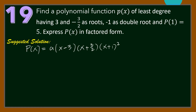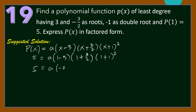Here, a is the leading coefficient of the polynomial function. Since P(1) = 5, we substitute x = 1: 5 = a(1 − 3)(1 + 3/2)(1 + 1)². So 5 = a(−2)(5/2)(4). This gives 5 = −20a, so dividing both sides by −20, we get 1 = −4a, and thus a = −1/4.